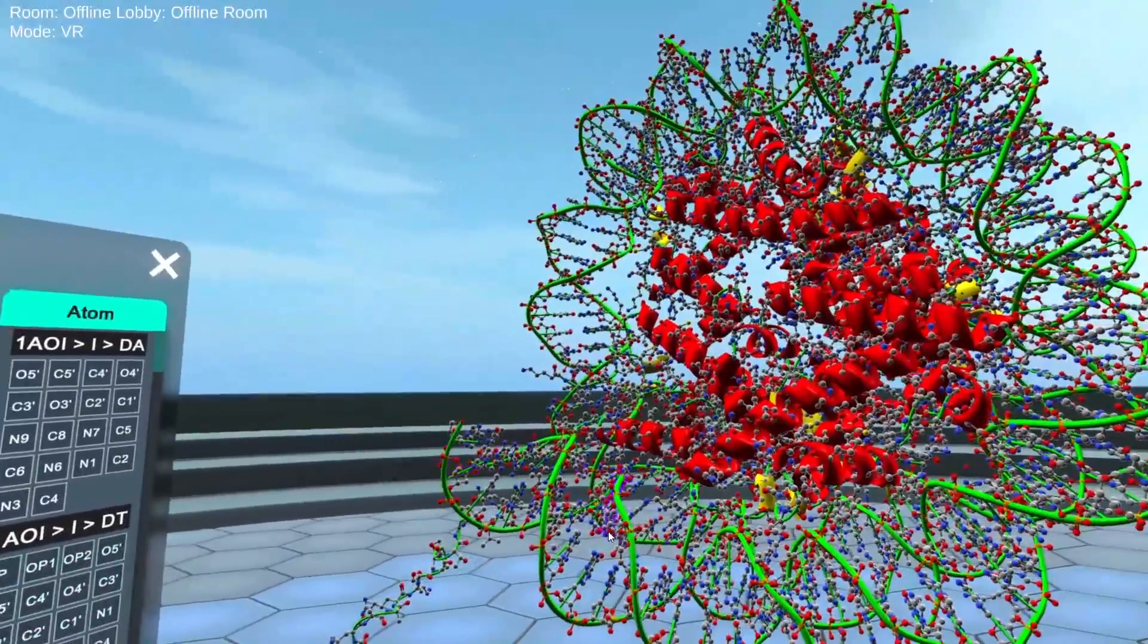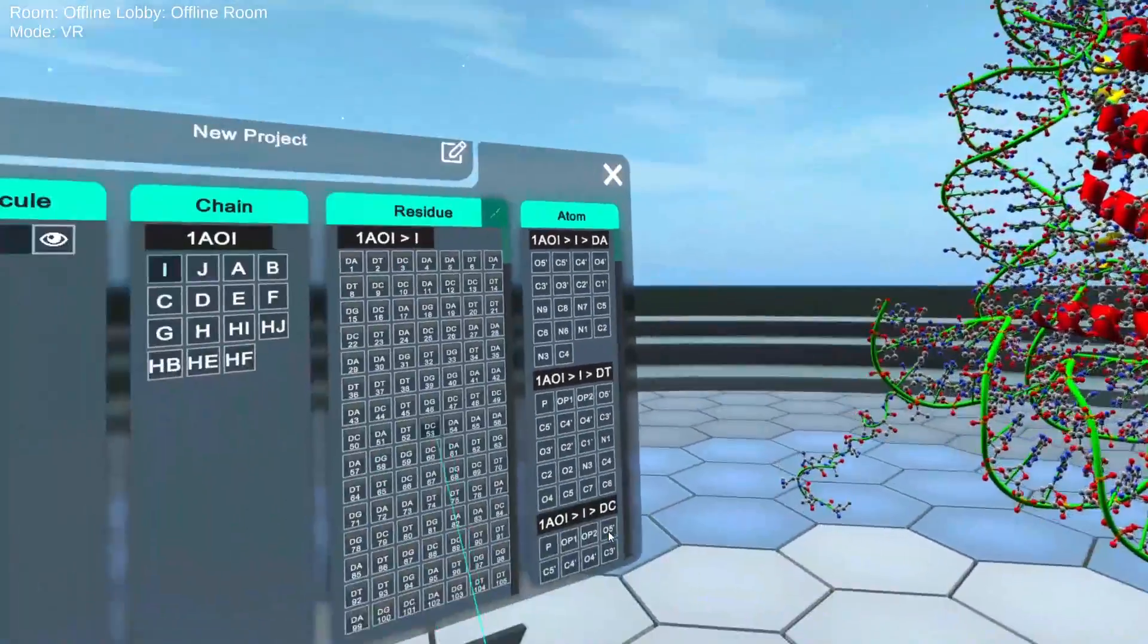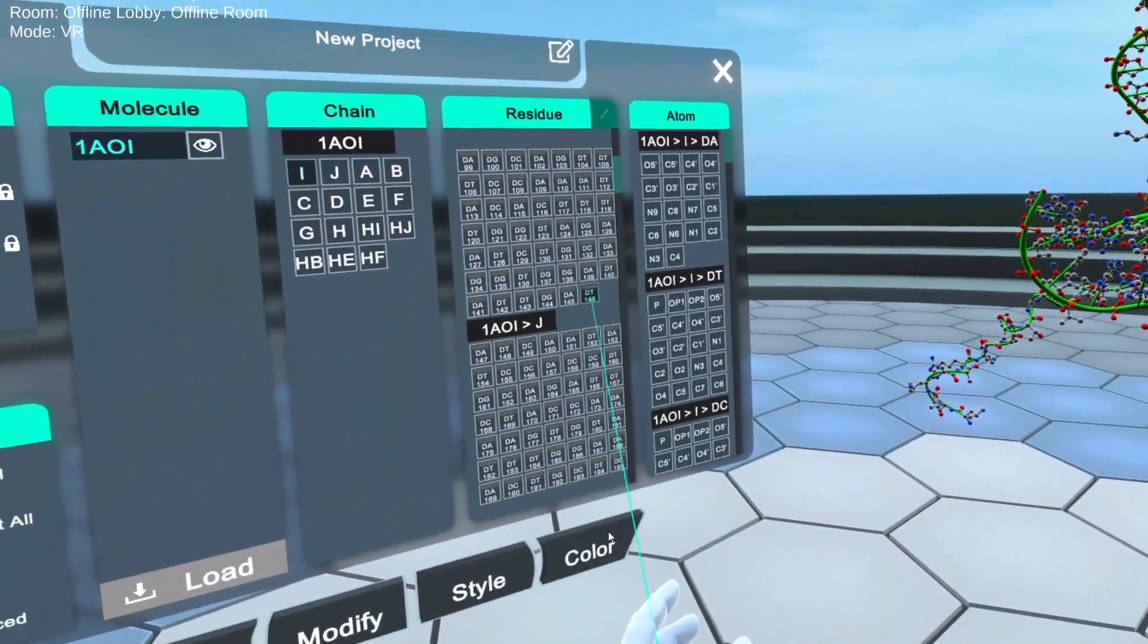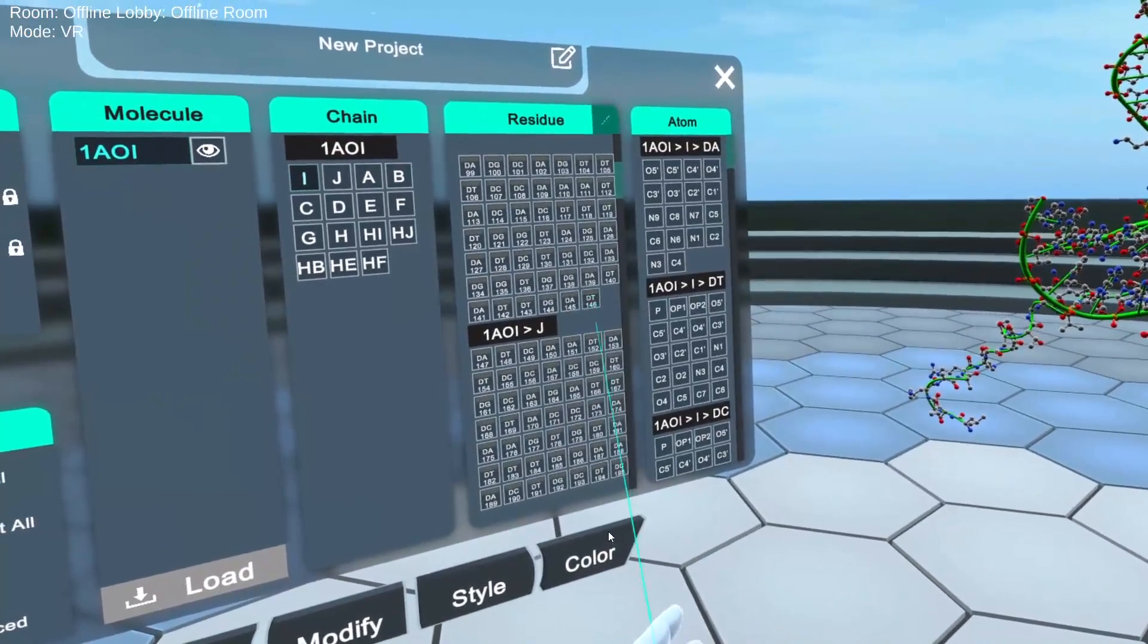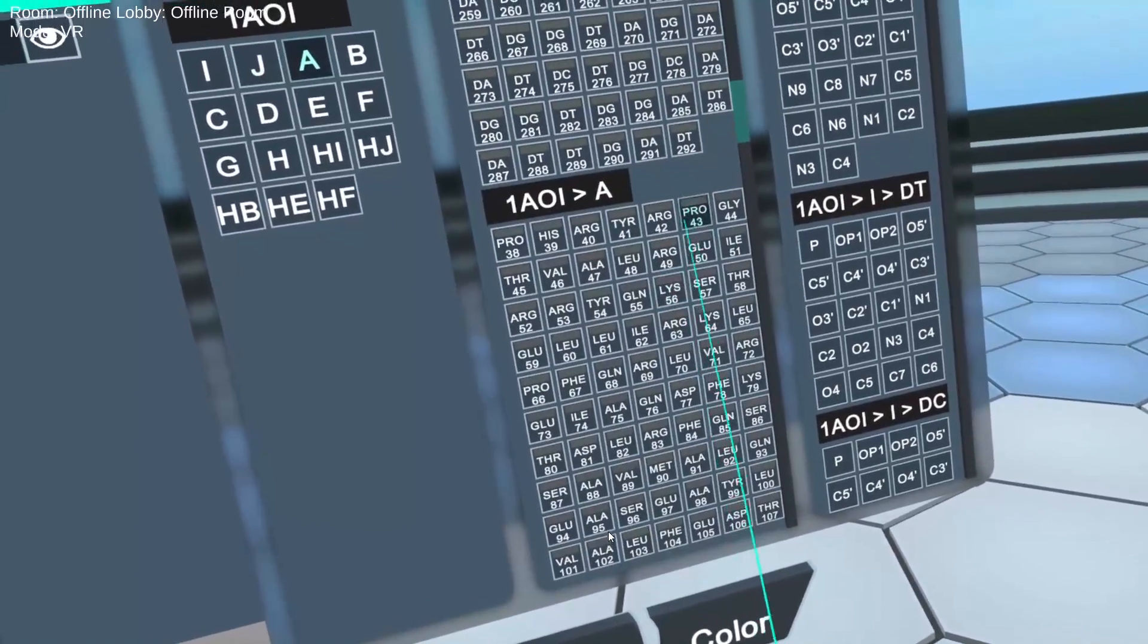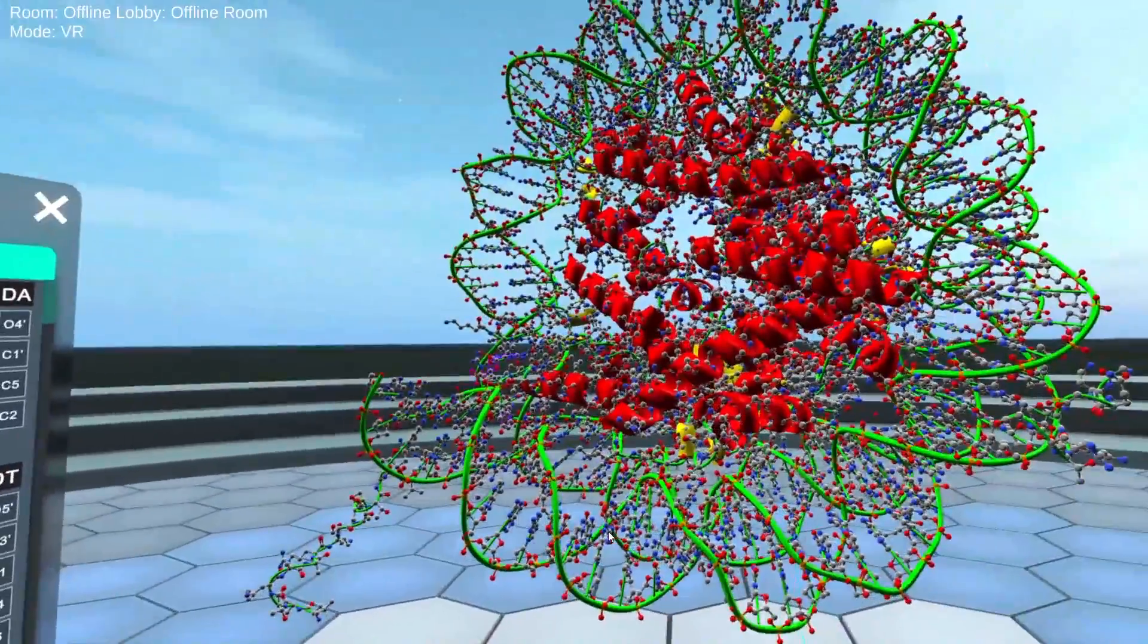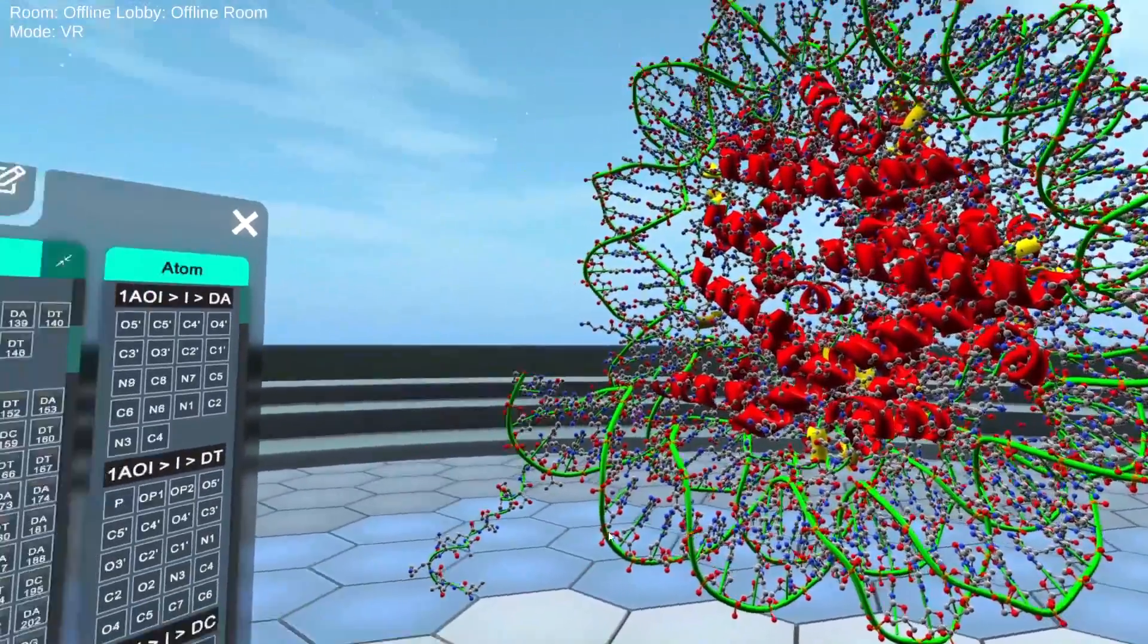And we can even highlight individual nucleotides here. We can see those being highlighted. And as we scroll through, it's important to see that there are 146 nucleotides or base pairs total. If we go 146 and 292, so that's 146 base pairs of DNA in this nucleosome.